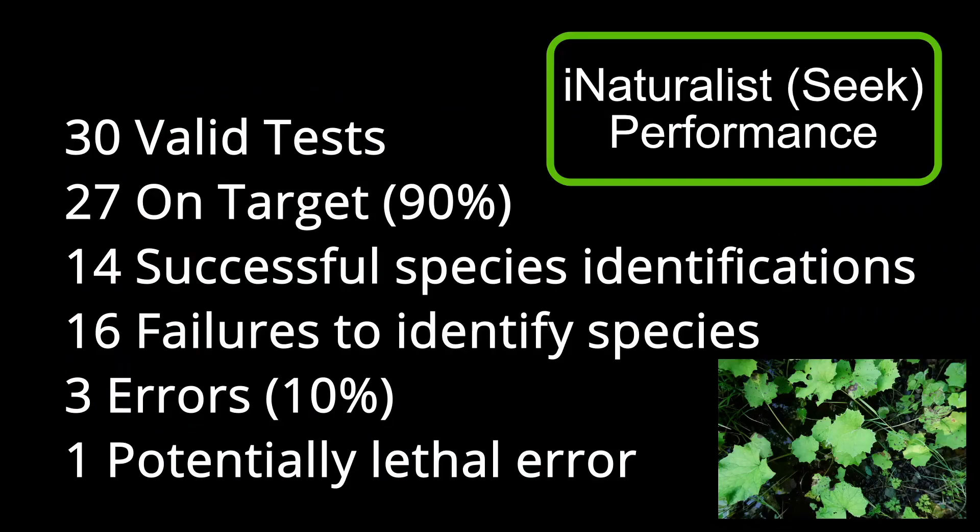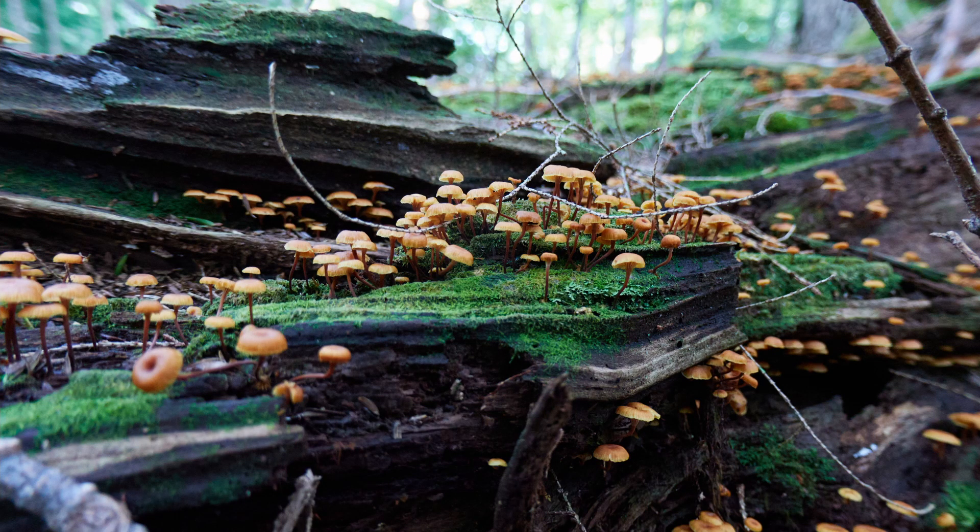iNaturalist Seek was on-target 90% of the time. However, of the 30 samples, it only correctly identified to species 14 times, meaning there were 16 failures to identify to species. And iNaturalist Seek committed three errors, one of which was technically only a failure but potentially so lethal that it counted as an error.